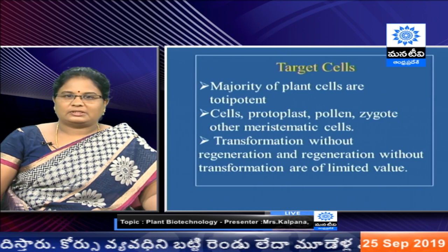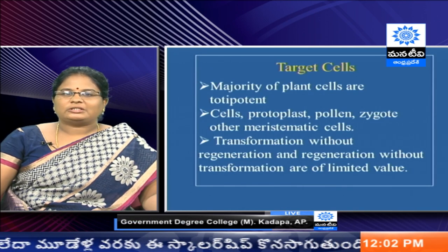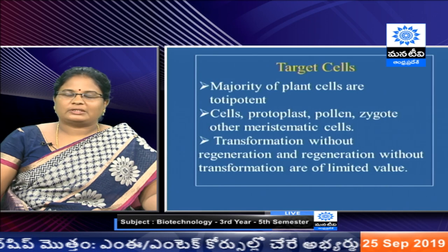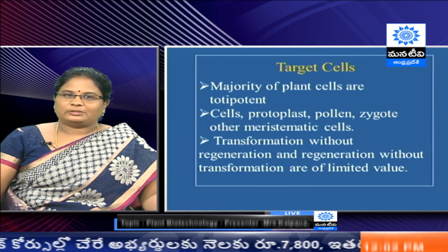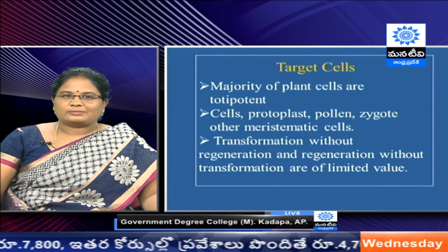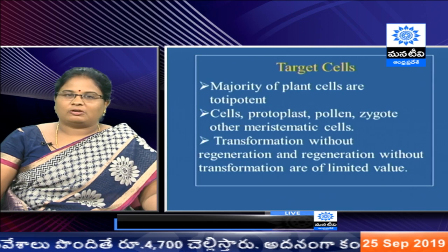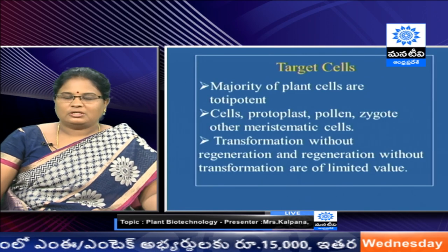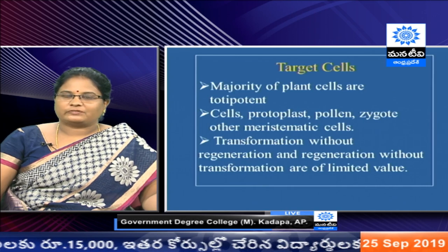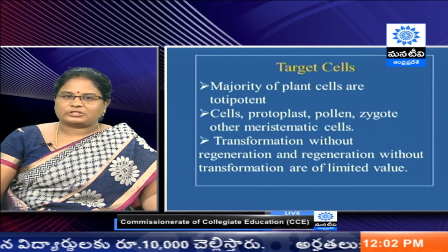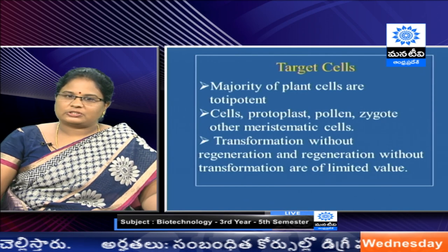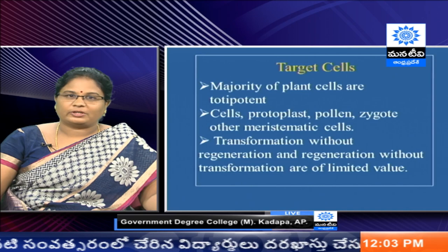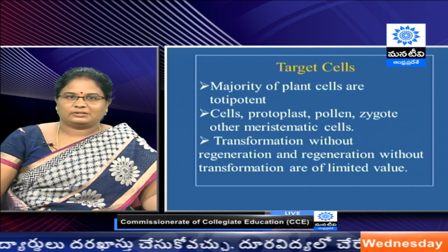The target cells are more varied in plants because the majority of plant cells are totipotent. Protoplasts, pollen, zygote, and other meristematic cells can be used for the production of transgenic plants. If any cell is modified with the transgene, then from that cell we should develop an entire plant — that is known as regeneration. Transformation is modification of the native plant cell with the gene of interest.